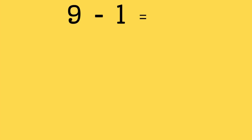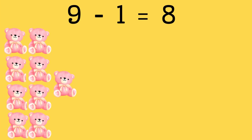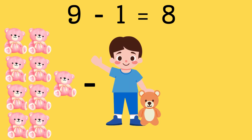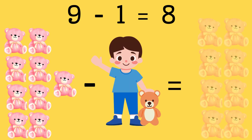9 minus 1 equals 8. Let's say you have 9 toys and you gave 1 toy to your brother. How many toys left? Correct, 8 toys.